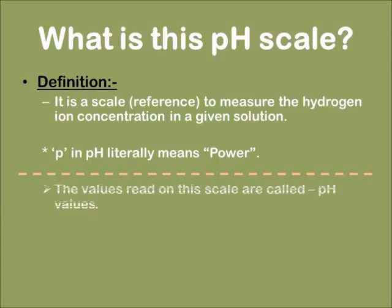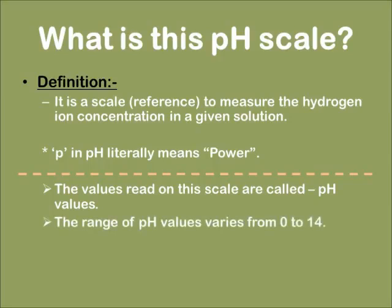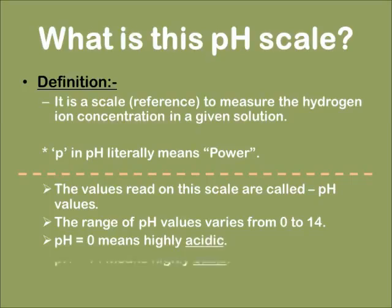The values read on the scale are called the pH values. The range of the pH values varies from 0 to 14. When we say that pH equals 0, it means that the substance is highly acidic. And similarly, when we say that pH equals 14, it means that the substance is highly basic in nature.